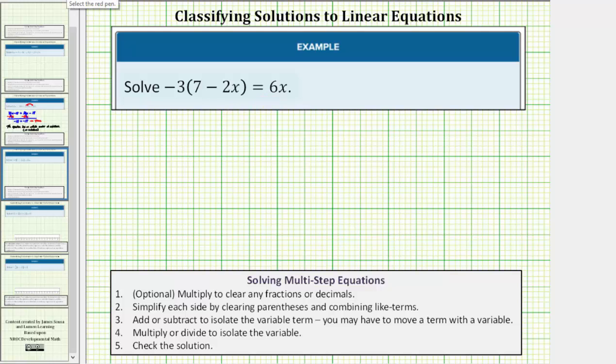So for the first step, we clear the parentheses by distributing negative three on the left side. So negative three times positive seven is negative 21. So we have negative 21, and then minus negative three times 2x is negative 6x.